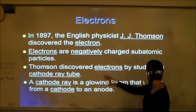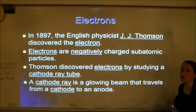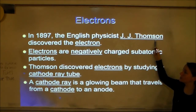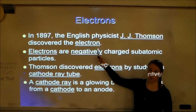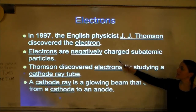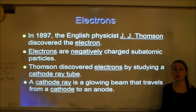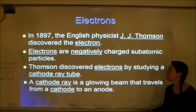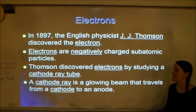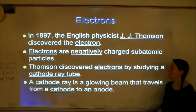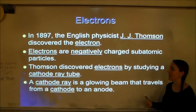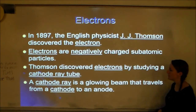Next we're going to talk about how each particle was discovered and who discovered it — the 'who' is the important part. J.J. Thompson discovered the electron. Electrons are negatively charged particles found around the nucleus in the electron cloud, or energy levels as we'll call it later. Thompson discovered electrons by studying a cathode ray tube. I'll show you a picture and give you an example of what a cathode ray tube looks like.